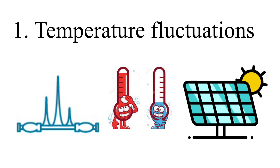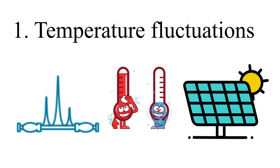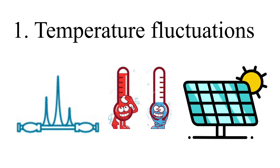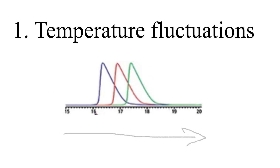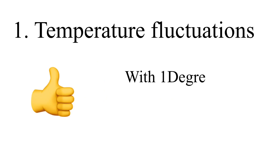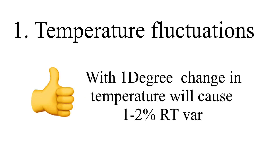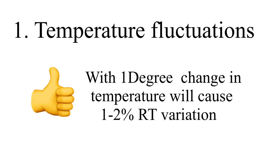Number 1: Temperature fluctuation. To get reproducible retention time, the temperature of the HPLC column compartment must be kept constant. Not only column compartment temperature, but fluctuation in laboratory room temperature can also cause retention time variation. If retention time of all the peaks is moving in the same direction, you can suspect temperature fluctuation as a possible cause. The rule of thumb says that one degree change in temperature will cause one to two percent variation in retention time.